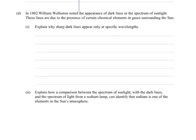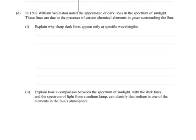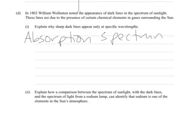Part D. In 1802 William Wollaston noticed the appearance of dark lines in the spectrum of sunlight. These lines are due to the presence of certain chemical elements and gases surrounding the sun. Explain why sharp dark lines appear only at specific wavelengths. Well, this is the absorption spectrum.